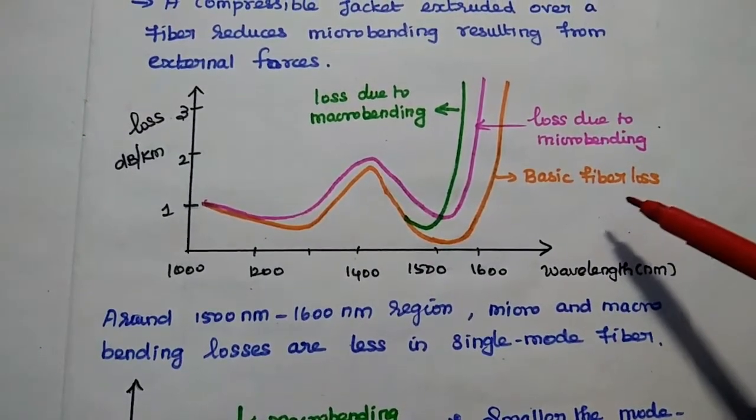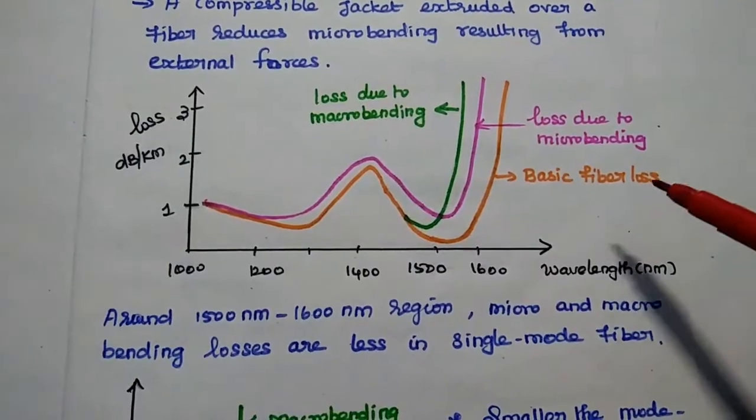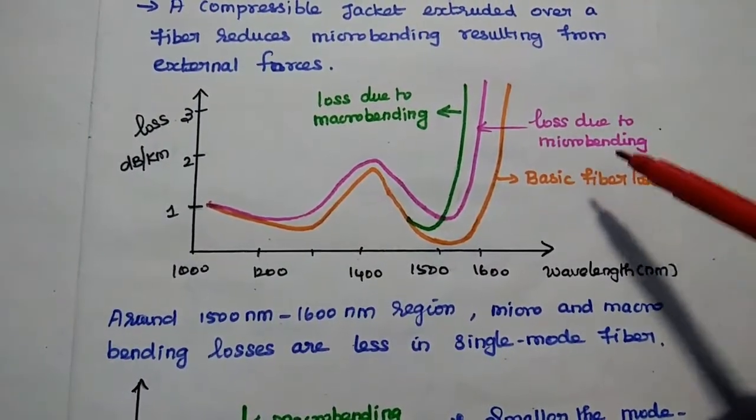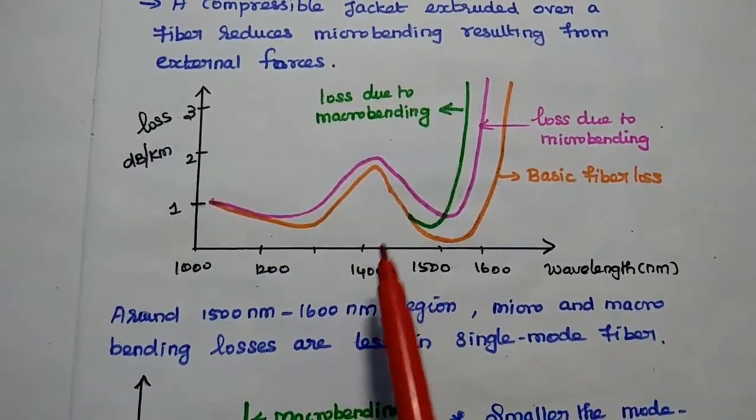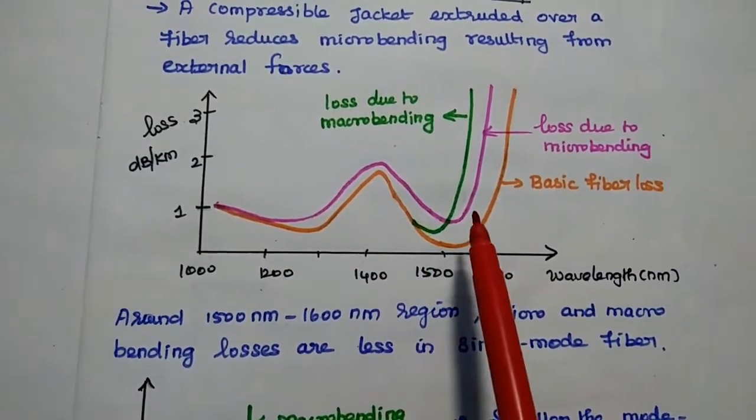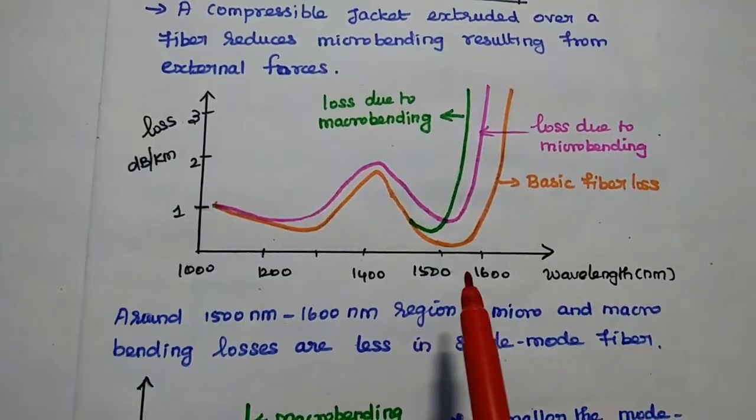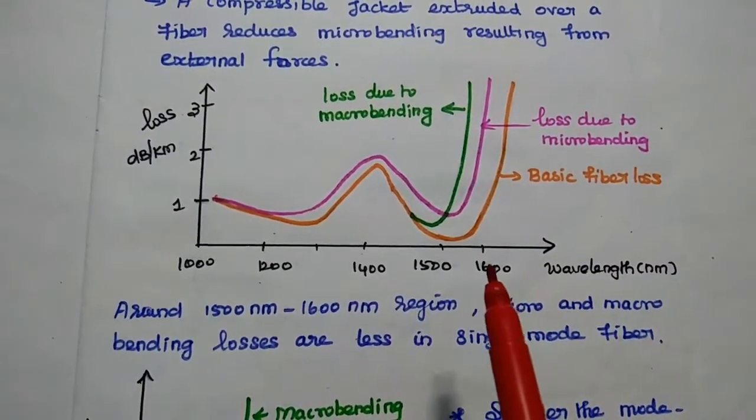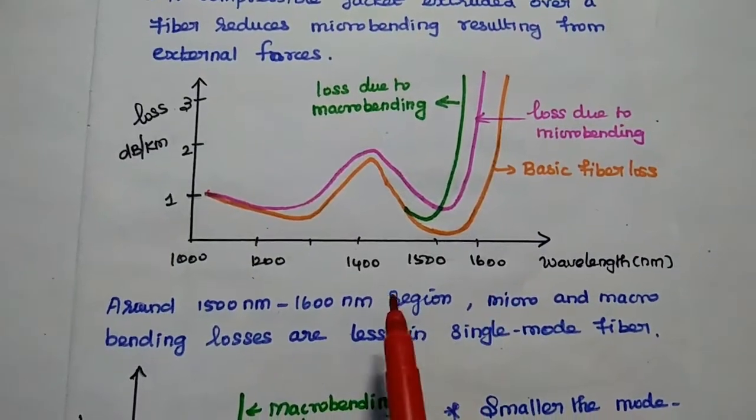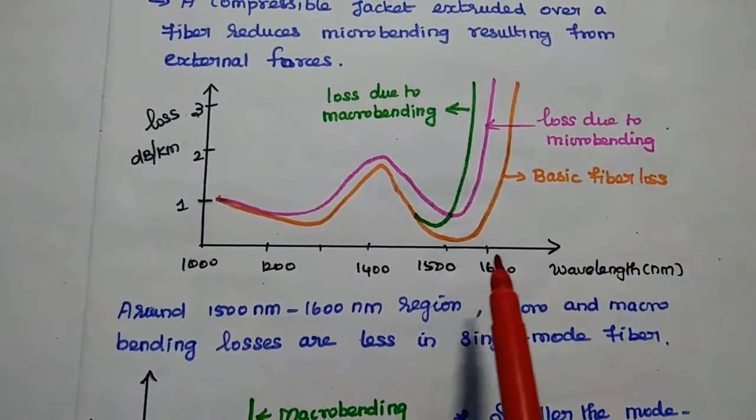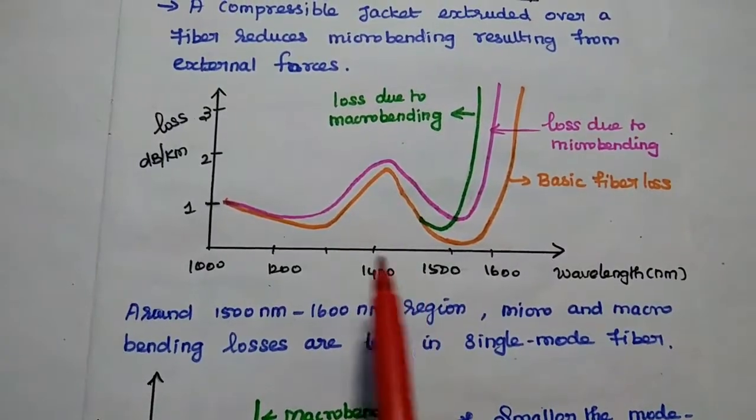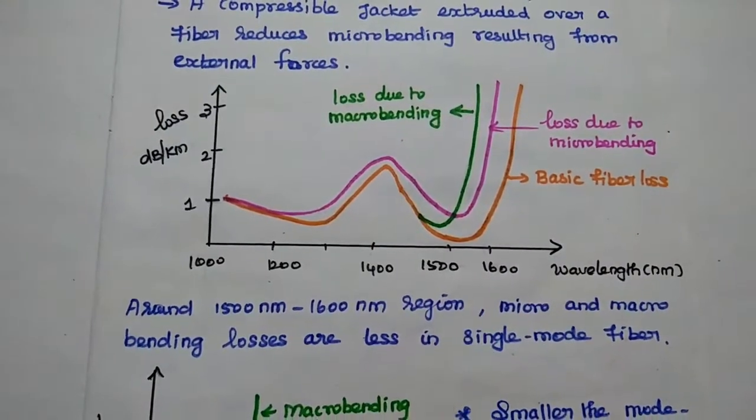One is basic fiber loss. Next one is loss due to micro bending. The next one is loss due to macro bending. From this diagram we come to know that around 1500 to 1600 nm range, the micro and macro bending losses are less in single mode fiber. It is almost very less when compared with other wavelengths.